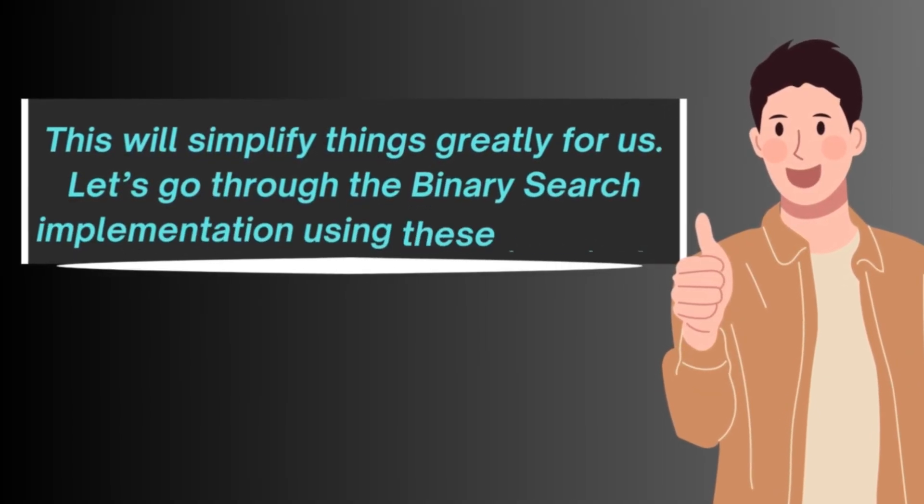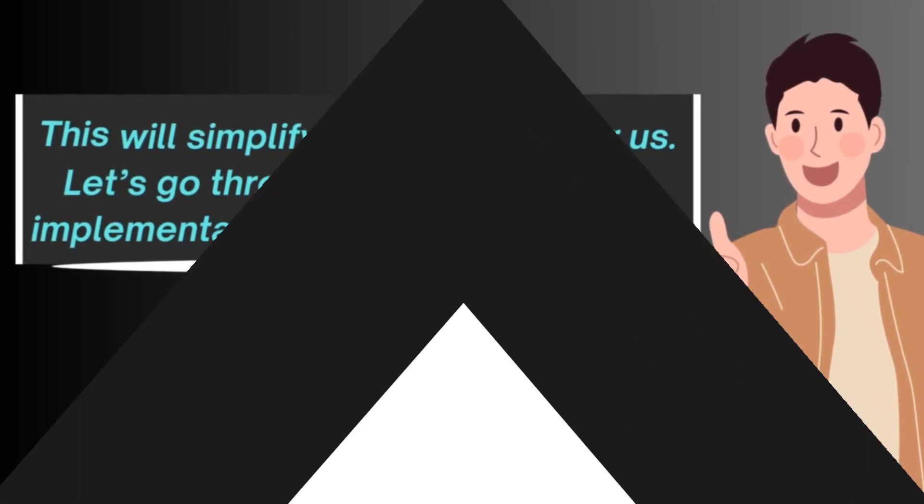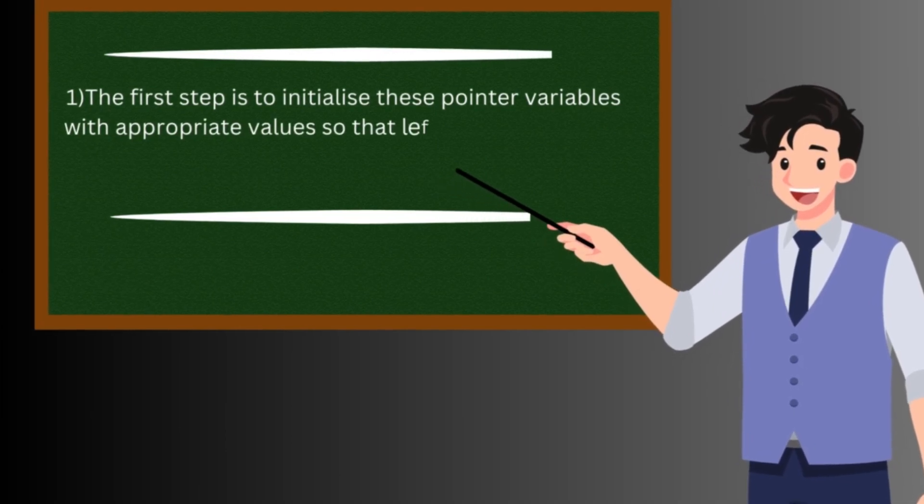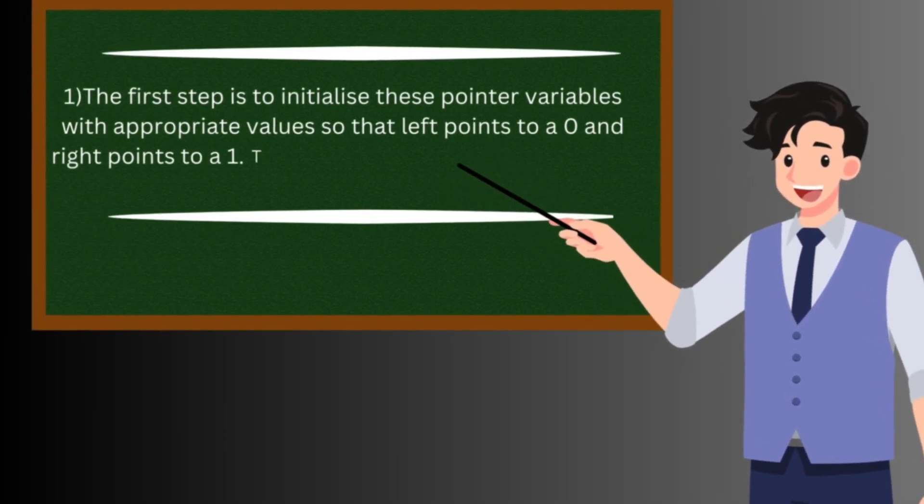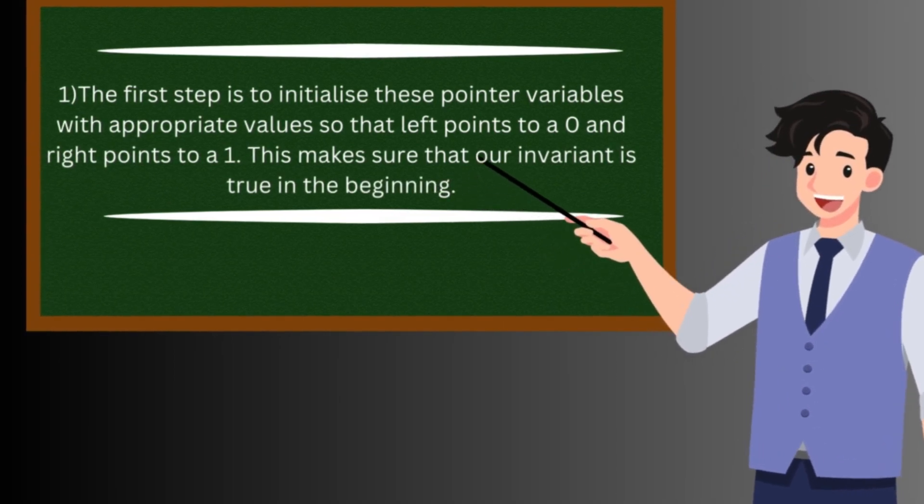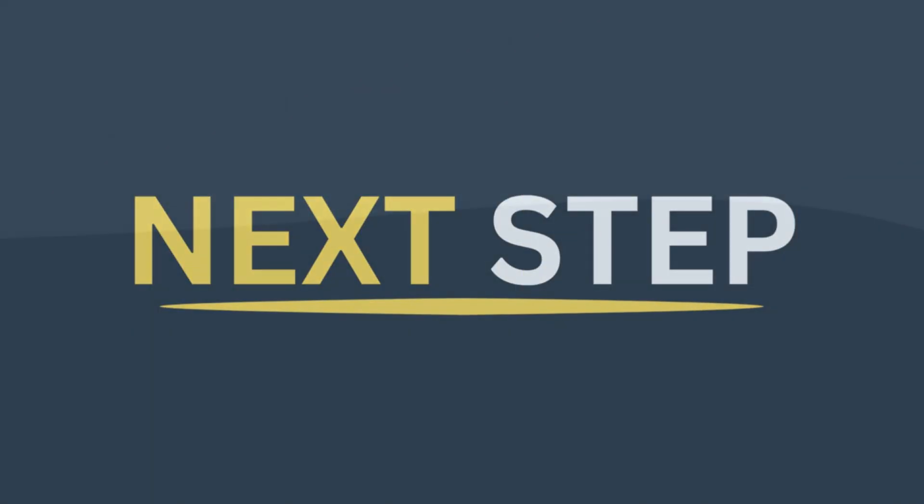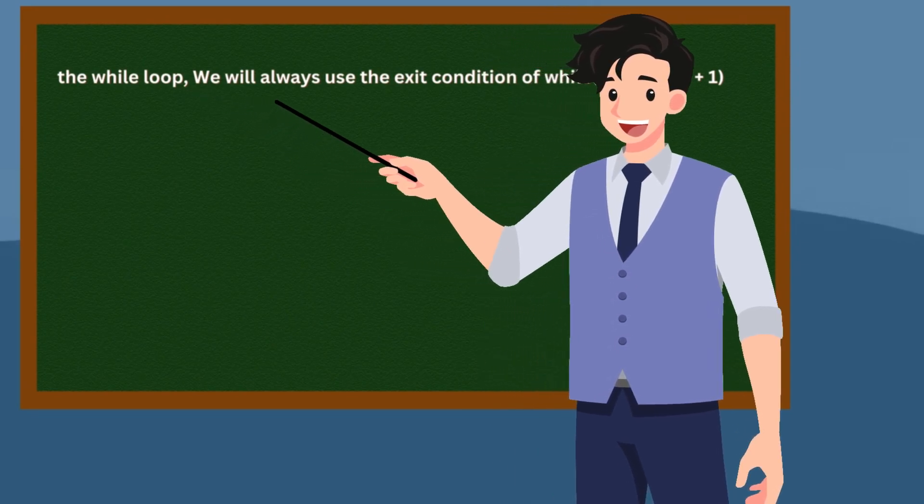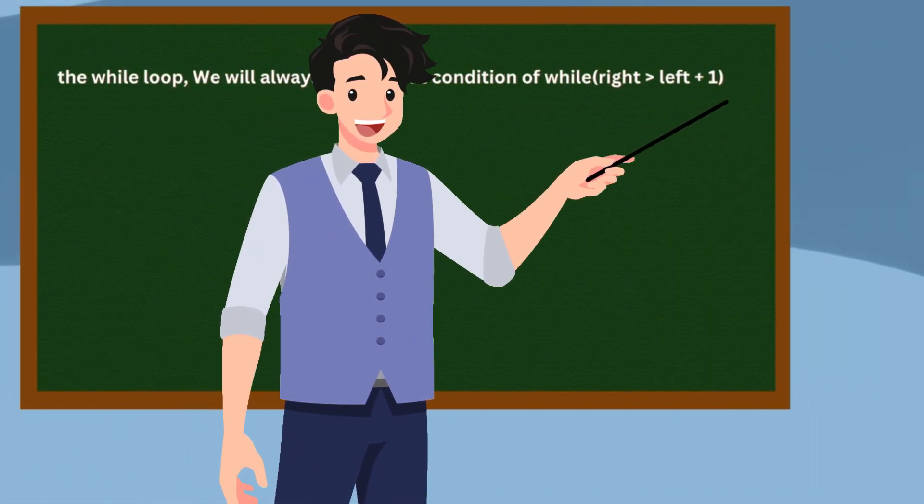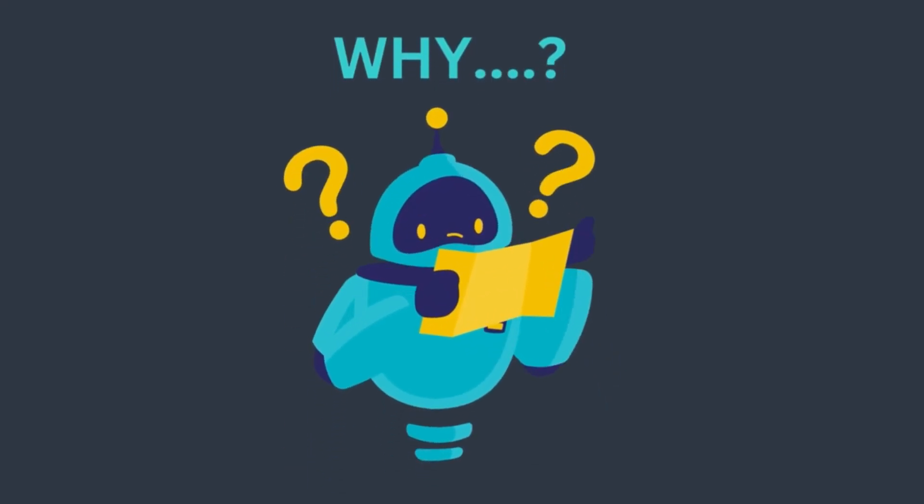Now, this will simplify things greatly for us. Let us go through the binary search implementation using these invariants. The first step is to initialize these pointer variables with appropriate values so that left points to a 0 and right points to a 1. This makes sure that our invariant is true in the beginning. In the next step, the while loop, we will always use the exit condition of while right is greater than left plus 1. Why, you ask?